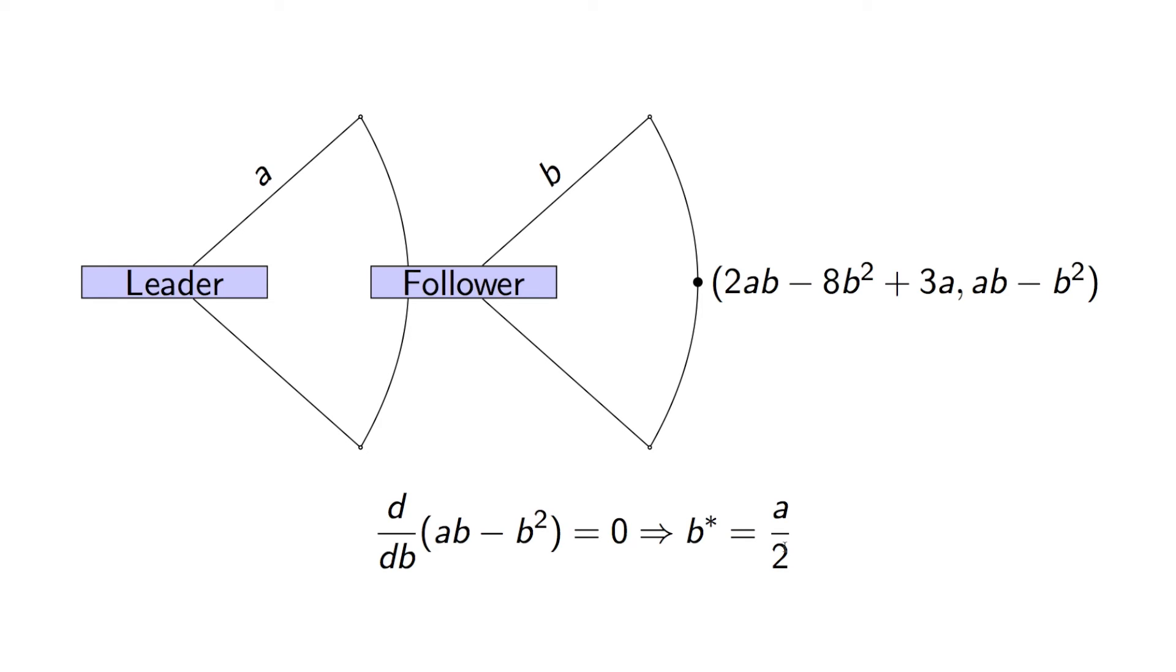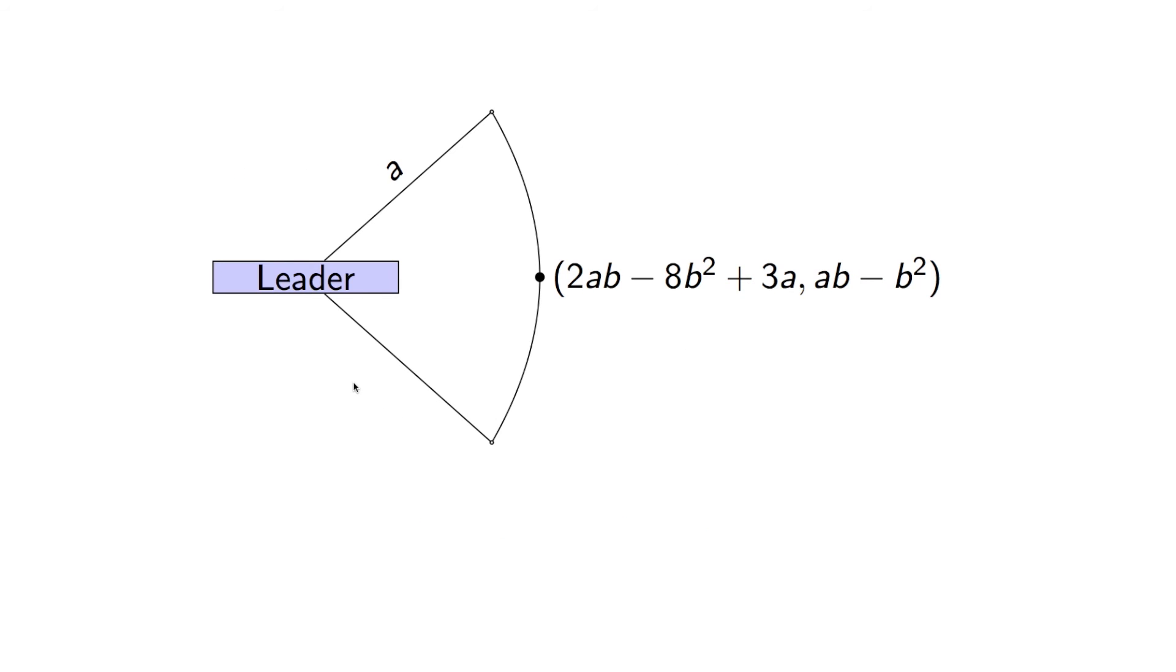And so we see that B star is equal to A divided by 2. So no matter what value of A the leader chooses, the follower will choose A divided by 2. Now, in essence, we can remove a bunch of dominated strategies. And so the tree reduces as long as, in every occurrence of B, we replace with B star. In other words, we're removing all the dominated strategies, and we get an expression like this.